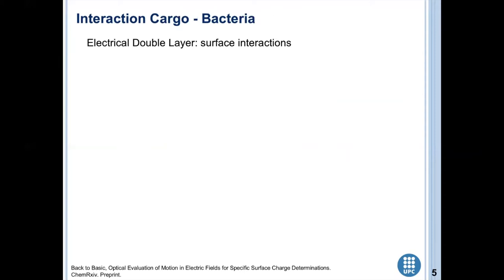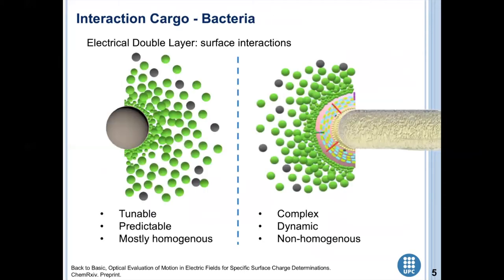For example, we have the electrical double layer or the surface charge of the particles and bacteria, which influences the interaction with the surrounding ions. This feature is quite important for the efficient development of bacteria bots. Inorganic particles are more tunable, predictable, and mostly homogeneous in their chemical composition or the chemical moieties on the surface, and that's why the interaction with ions is quite well known.